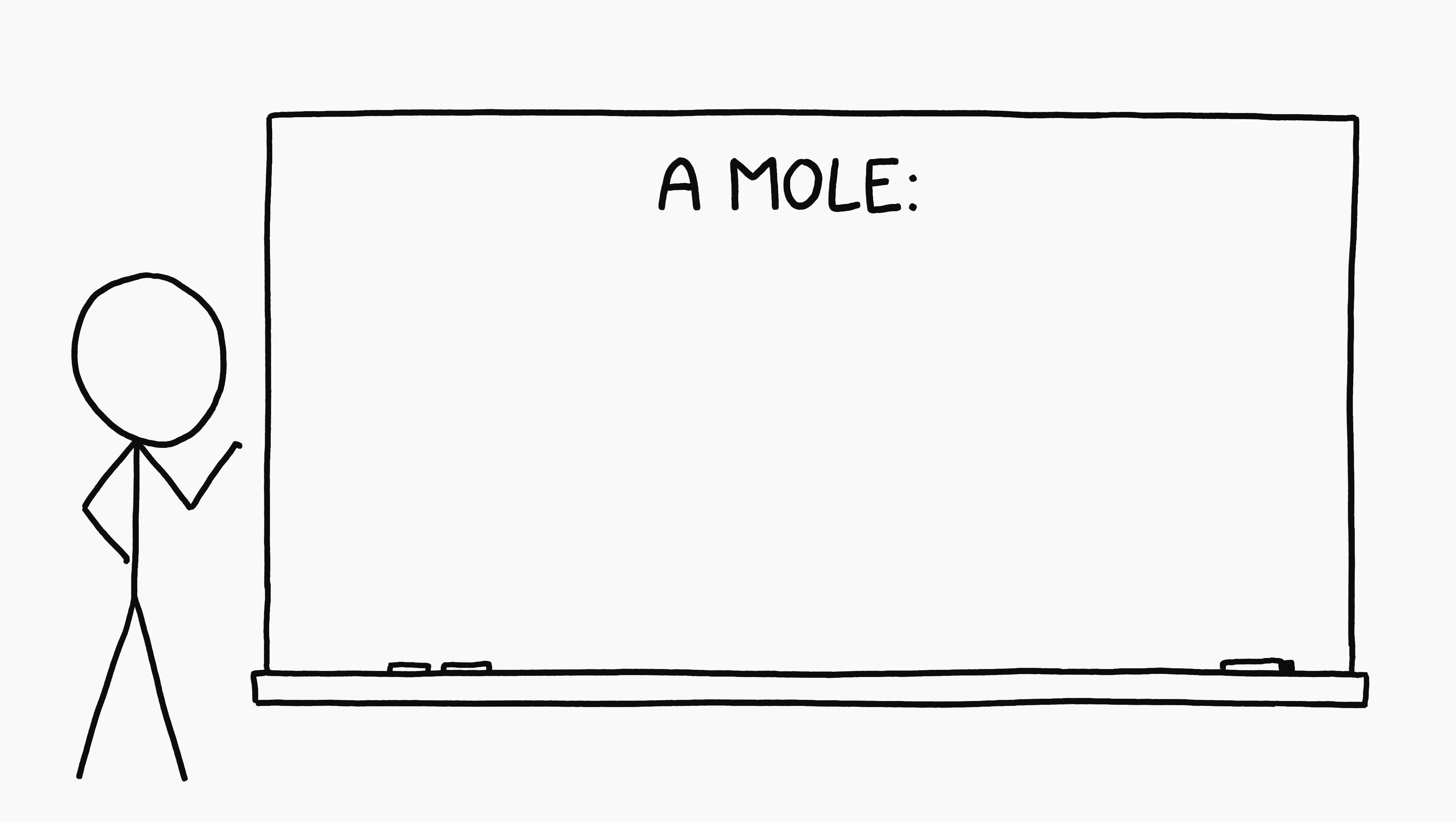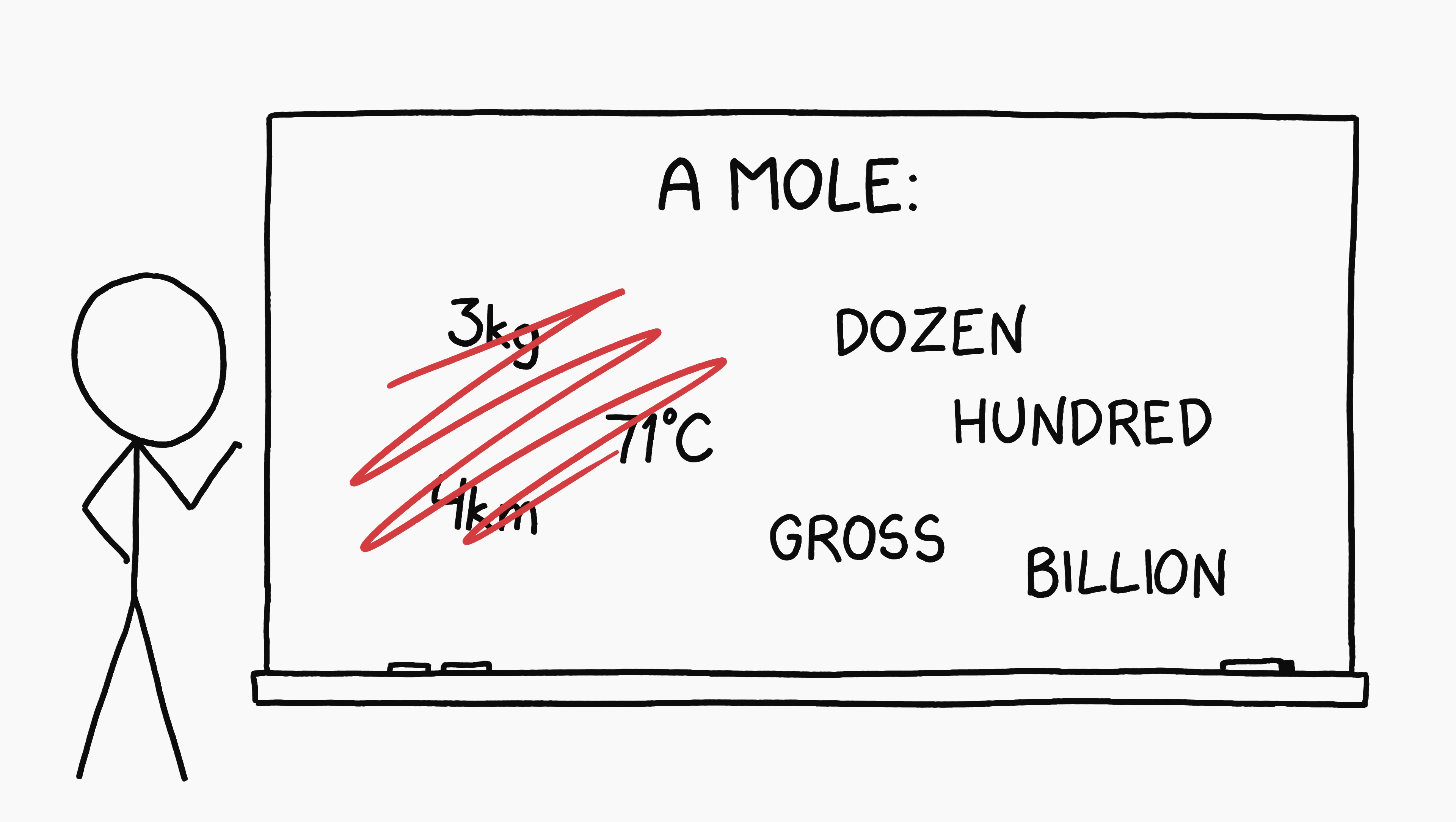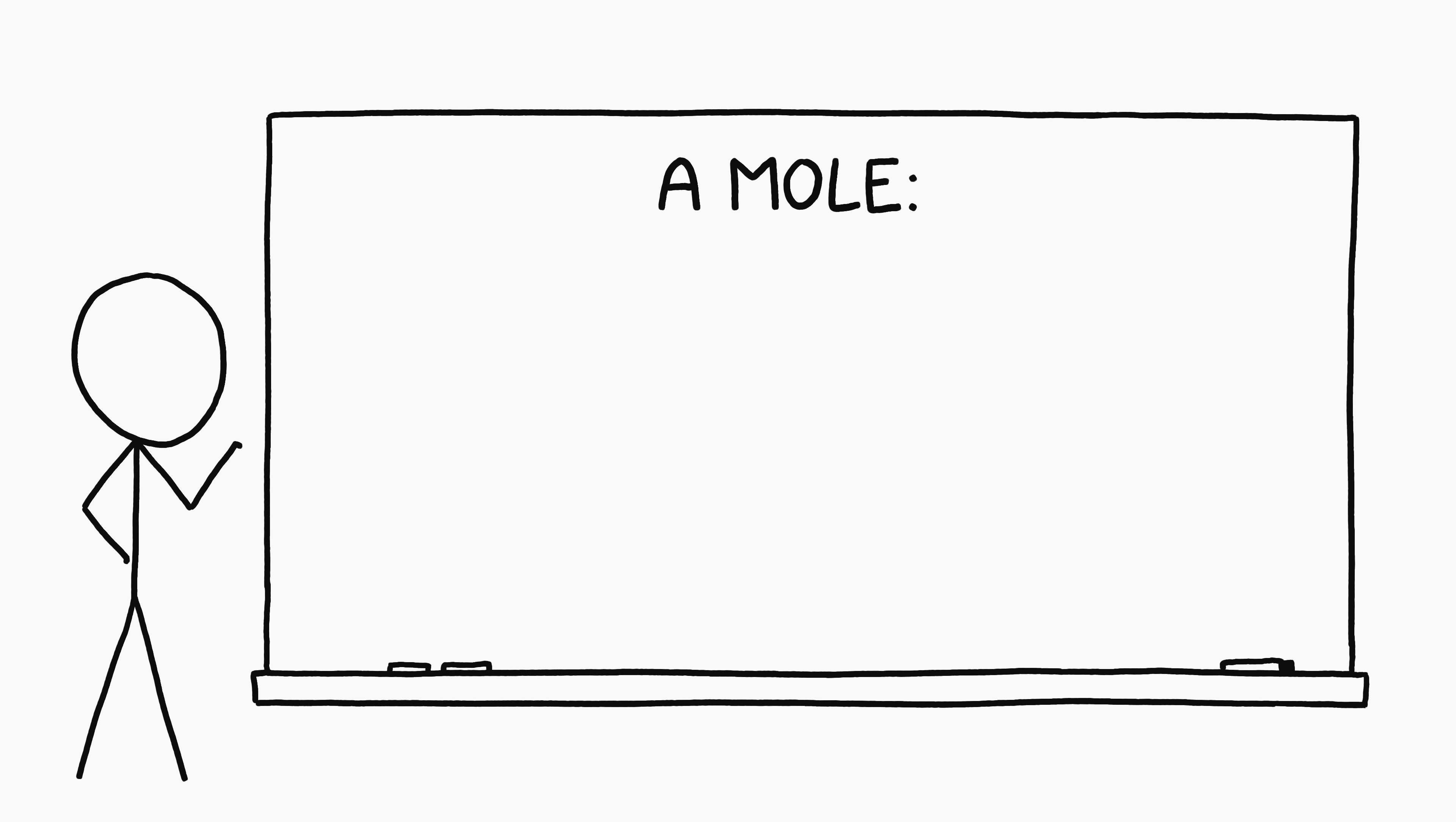First, some definitions. A mole is a unit. It's not a typical unit though, it's really just a number, like dozen or billion. If you have a mole of something, it means you have 602 sextillion, 214 quintillion, 129 quadrillion of them, which is usually written 6.022 times 10 to the 23rd.